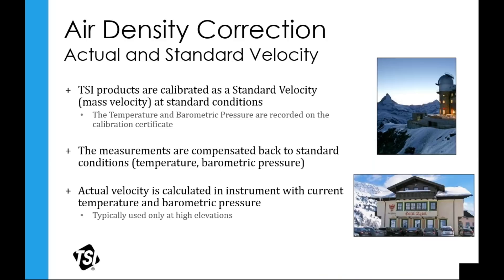One important thing to keep in mind is air density. We calibrate products to standard conditions — 70°F at 29.92 inches of mercury, generally what you see at sea level. Without a common baseline, it's difficult for HVAC professionals to reproduce measurements. Air density correction definitely needs to be considered when taking measurements, especially at higher elevations.